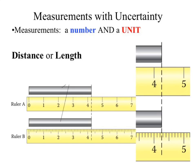If we scale up to a finer measurement, the 4.2 is now certain, and we now have a guess digit on the next place. We've got 4.25 centimeters — you need the unit. All of that 4.2 is certain, and the 5 is our uncertain guess digit.